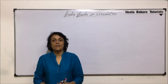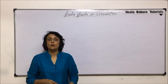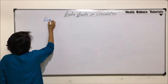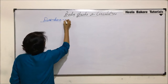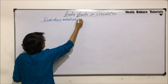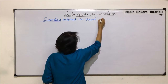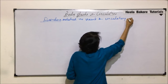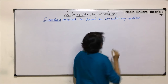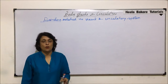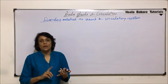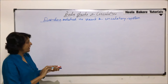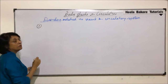We will now be discussing the various disorders related to the heart and the circulatory system. We will be talking about all the disorders, whether associated with the heart, blood vessels, valves, or functioning — everything. We will start with Arrhythmia.